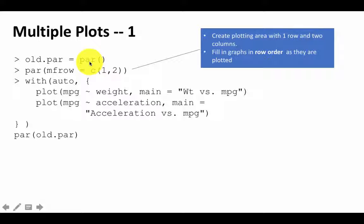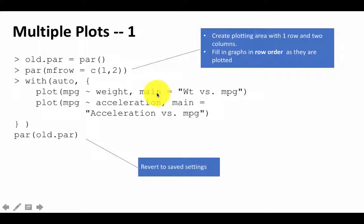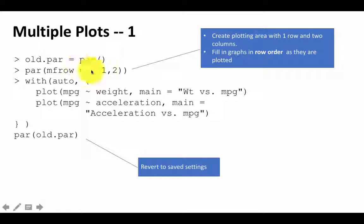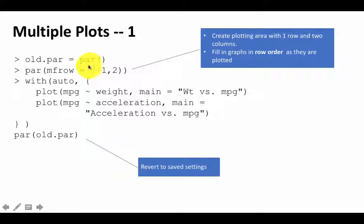Now, why are we saving par as old.par? Because what we are doing is changing some plotting parameters, and those changes will persist. We don't want that — we want to change the parameters, look at our charts, and then set things back to what they were. So before making the change, we call par() which returns all the graphics parameters and save them in a variable called old.par. Then we do all our plotting, and once done, restore everything by calling par(old.par). That's the clean way to manage graphics parameters.